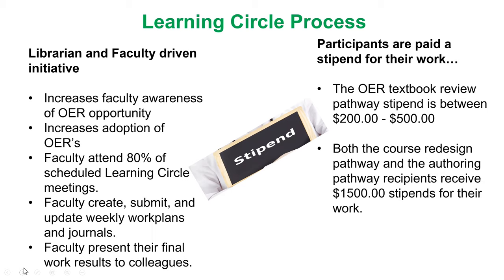At the very end of our 10-week session, faculty present their final results to their colleagues in the cohort and share their successes and ideas. Participants are paid a stipend — at the institutional level, between $200 to $500 for reviews, and about $1,500 for course redesigns and authoring. At the system level, that is about 0.5 release credit depending on each faculty member's years of service or base wage.